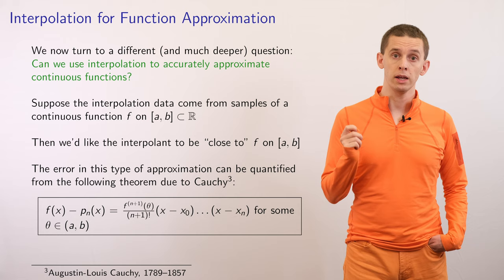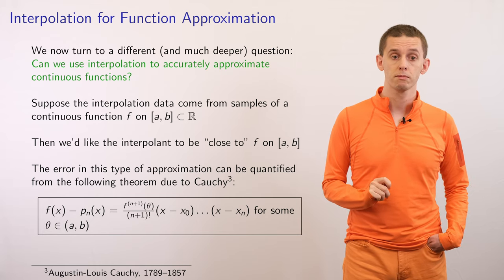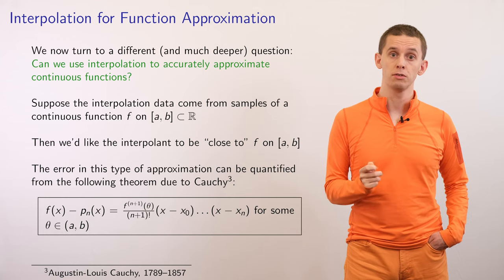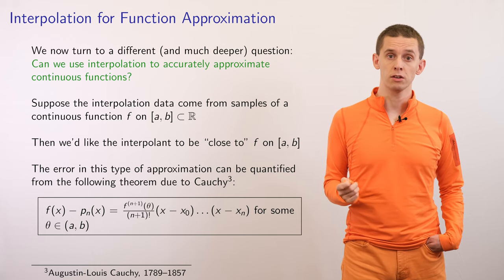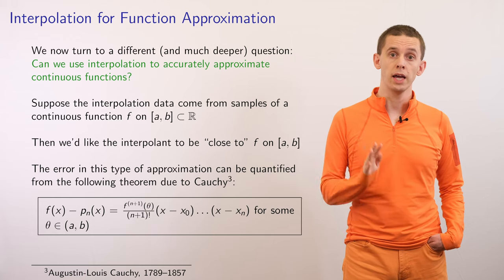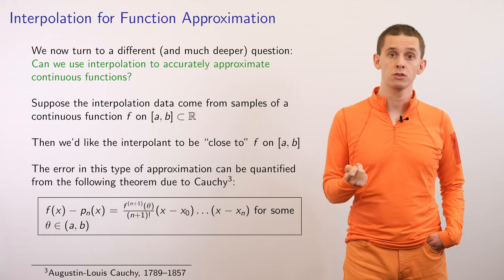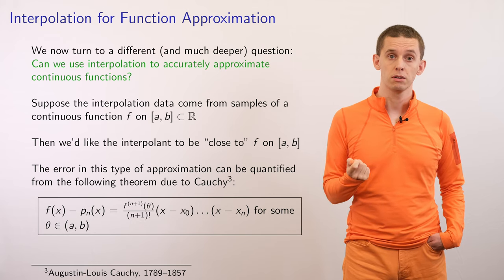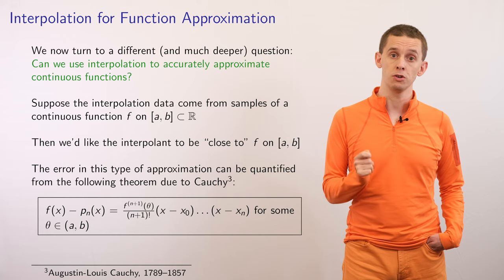We can actually write down a bound on the difference between our function f and the polynomial interpolant pn of x. This works out to be: f(x) minus pn(x) equals the (n+1)th derivative of f, f^(n+1)(θ), divided by (n+1) factorial, multiplied by the factors (x − x0)(x − x1) up to (x − xn), where θ is some value between a and b excluding the two endpoints. The right-hand side vanishes at the interpolation points, which makes sense because our polynomial goes through those points by construction.